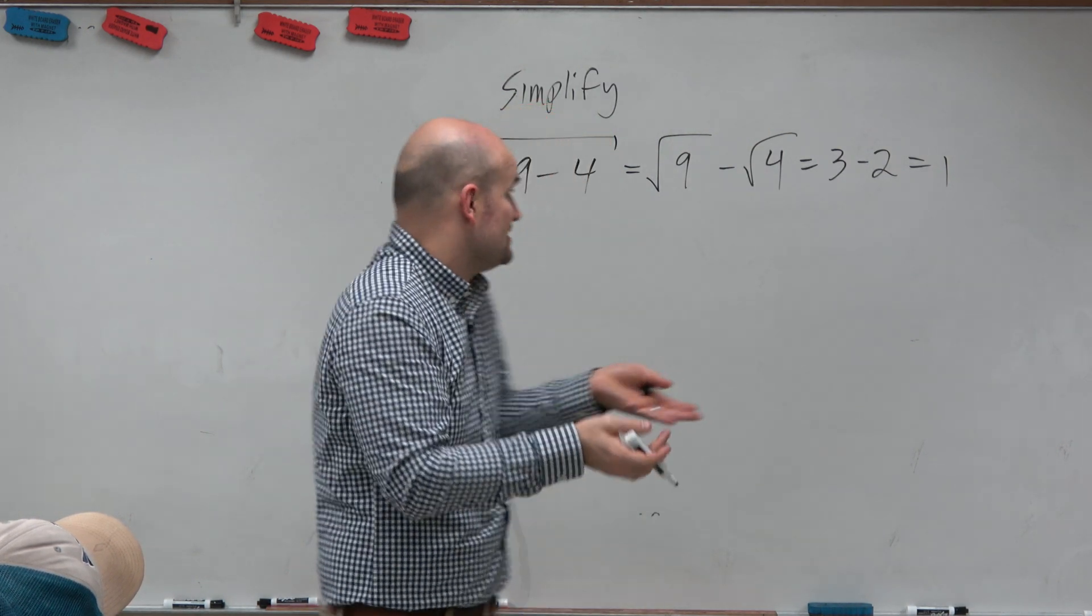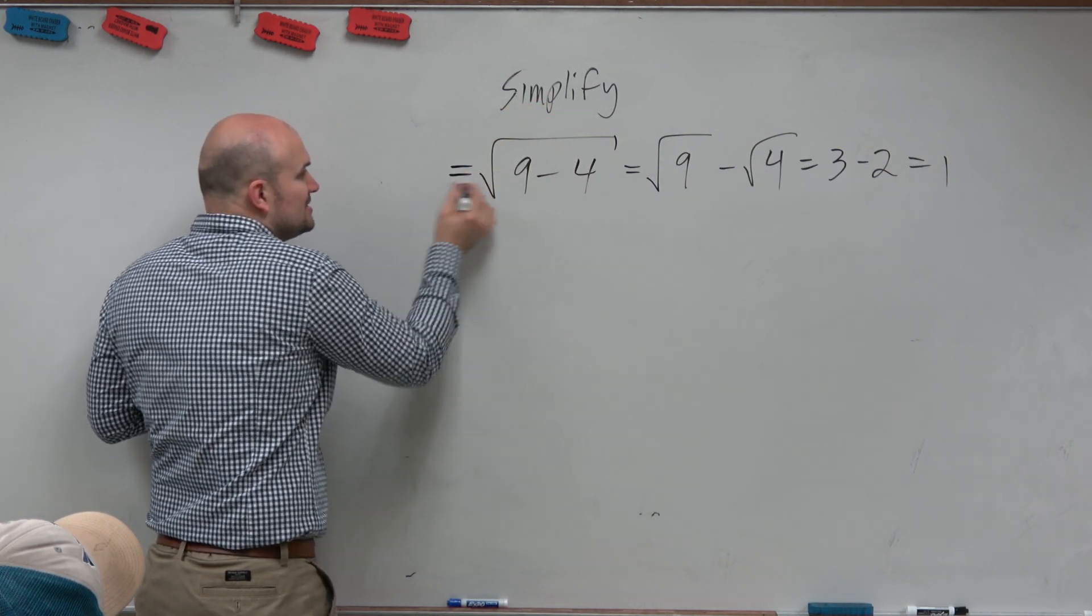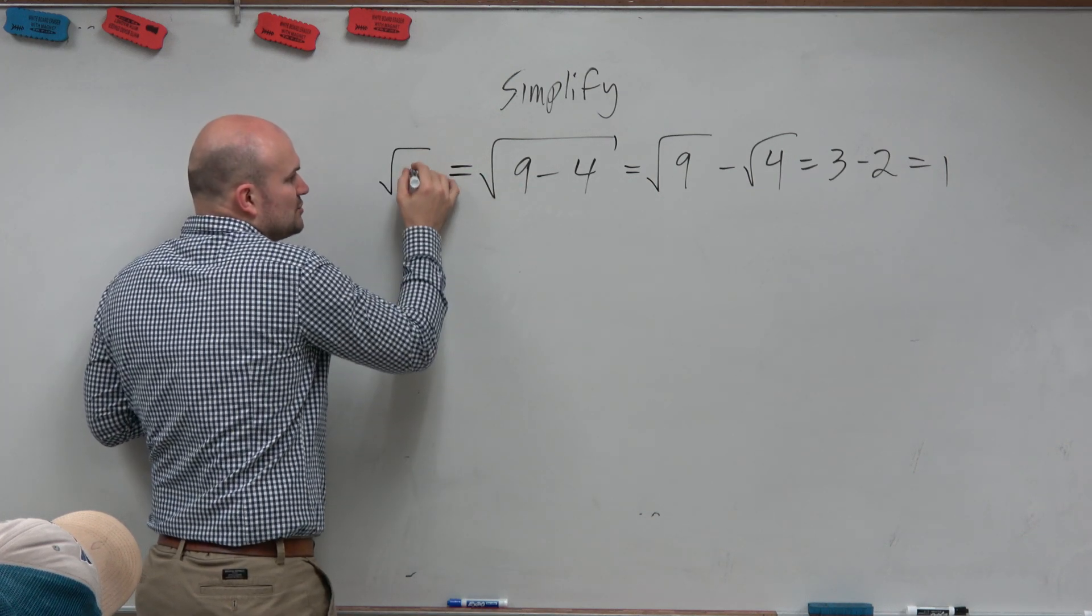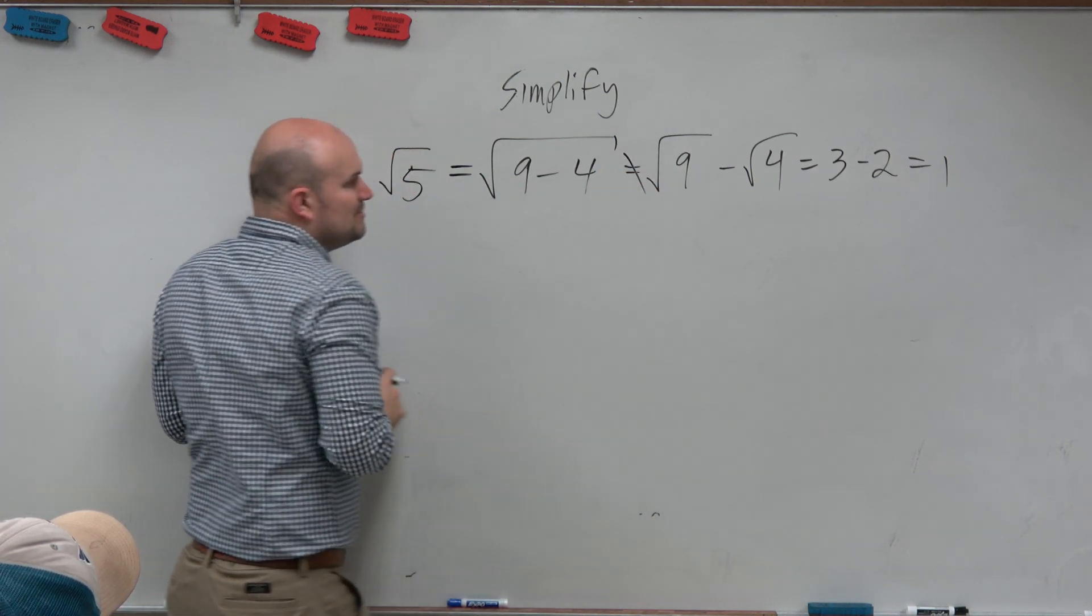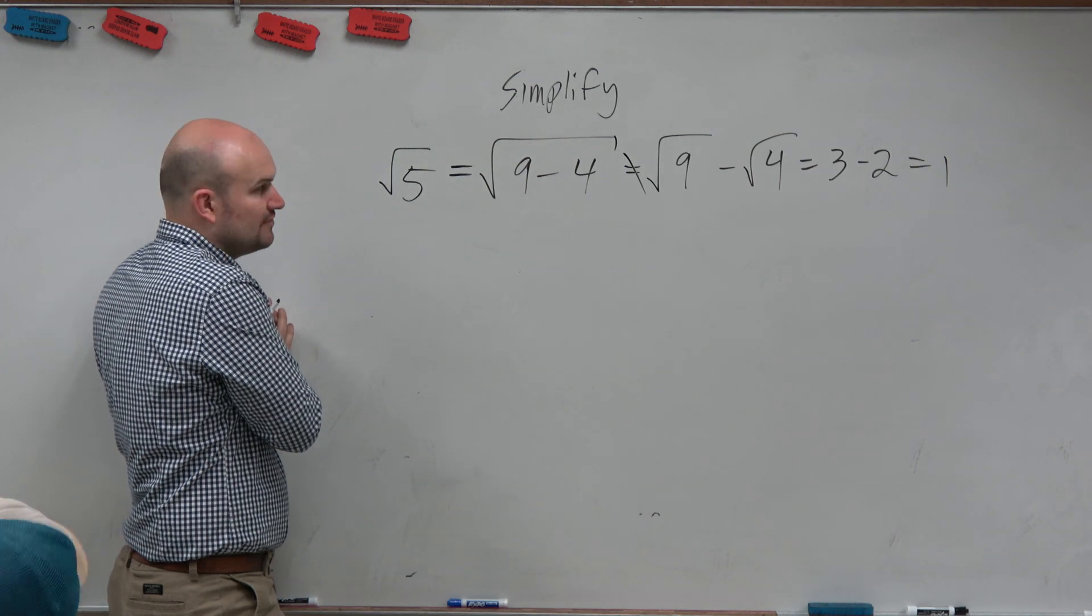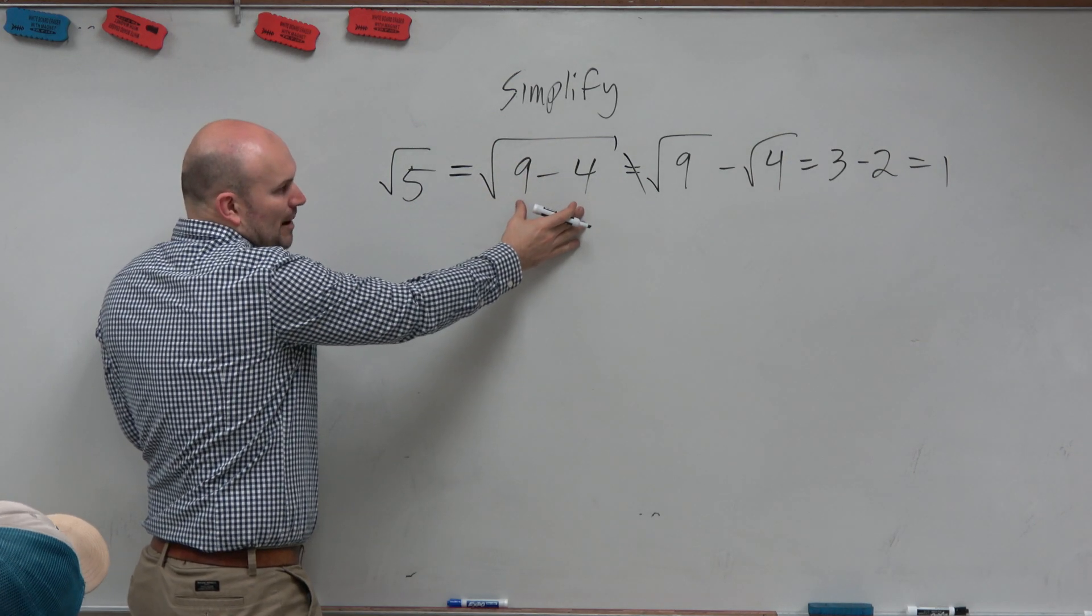And so if you apply PEMDAS, or the order of operations, you can see you have to subtract these first, which is the square root of 5. So you can't break it up into the square root of 9 minus the square root of 4.